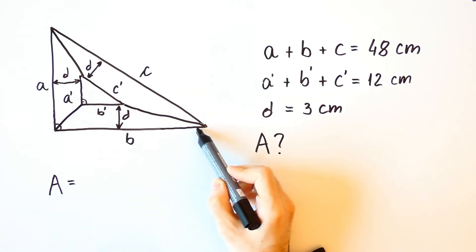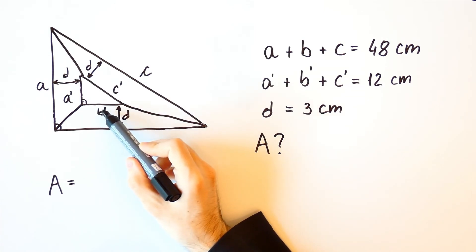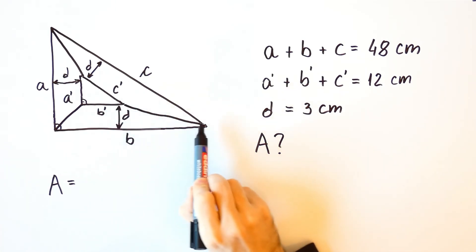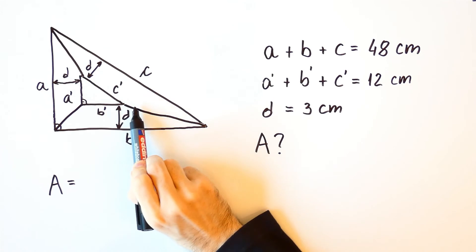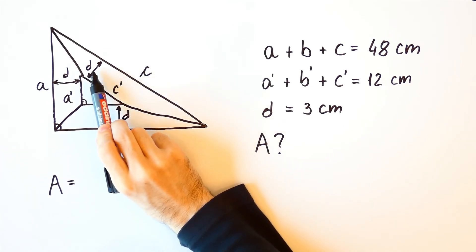The area of this trapezium is B plus B prime over 2 times D. And the area of this trapezium is C plus C prime over 2 times D.